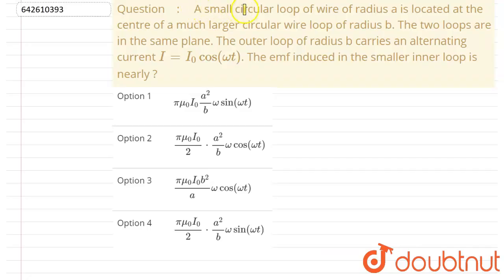Hello everyone. A small circular loop of wire of radius A is located at the center of a much larger circular loop of radius B. The two loops are in same plane, outer loop have a radius B and alternating current. EMF induced in the smaller loop is nearly what?